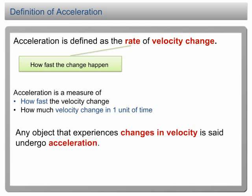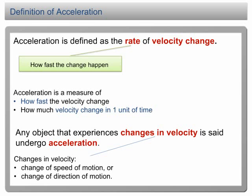Any object that experiences changes in velocity is said to undergo acceleration. We should take note that velocity is a vector quantity. A vector quantity has magnitude and direction. Therefore, the change in velocity can be change of speed or change of direction. In other words, an object traveling at uniform speed but keeps on changing direction is considered to undergo acceleration.